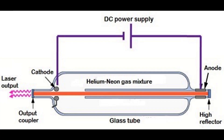The helium-neon laser consists of three essential components: 1. Pump source — high voltage power supply. 2. Gain medium — laser glass tube or discharge glass tube. 3. Resonating cavity.